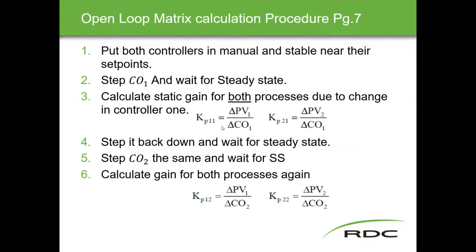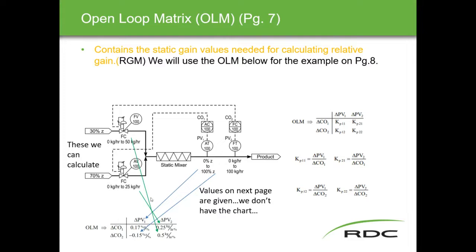To get the static gains, make a change in controller one, measure how much it affected PV1 and PV2, and divide them over each other to get KP11, KP12, KP21, and KP22. You do it first with one controller, then with the other. Looking at the PVs and the manipulated variables — the control outputs — this is where we get that data from. The ILM previously used a simpler example and walked through all the steps; the math is essentially output over input.